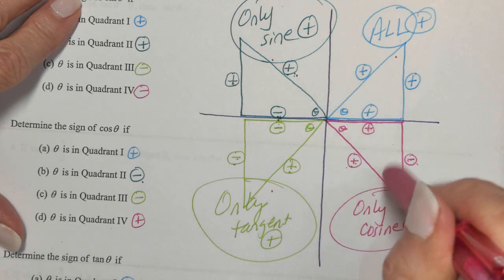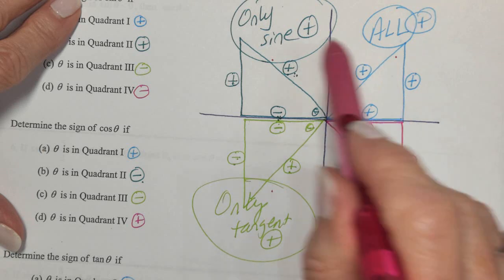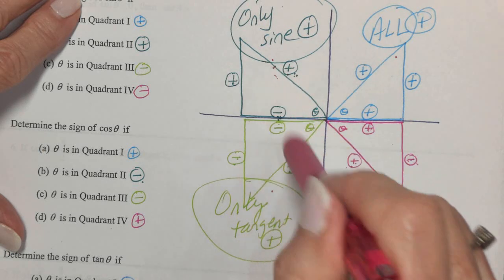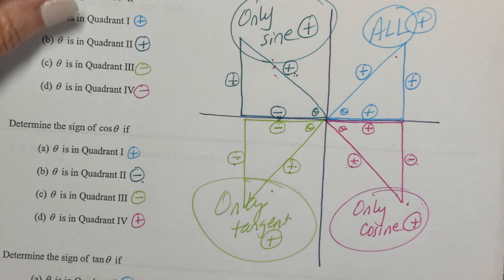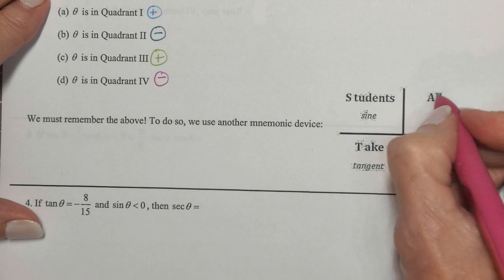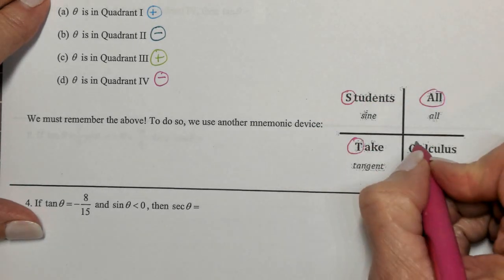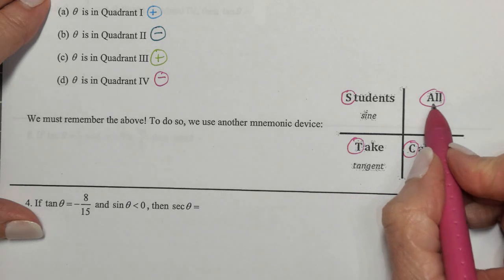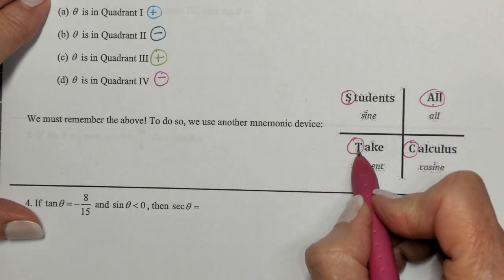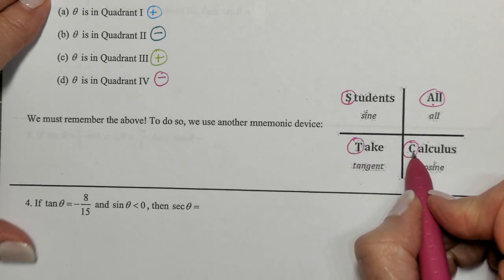We need to know that pattern — where trig functions are positive and negative. To help remember it, we use the mnemonic: All Students Take Calculus. All are positive in quadrant 1. Only Sine is positive in quadrant 2. Only Tangent is positive in quadrant 3. Only Cosine is positive in quadrant 4.